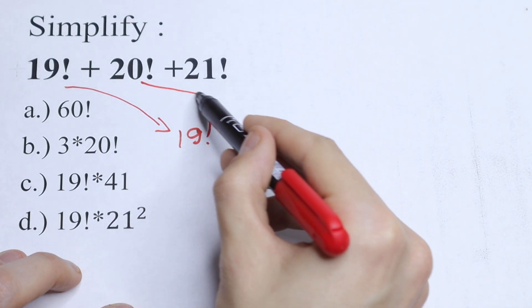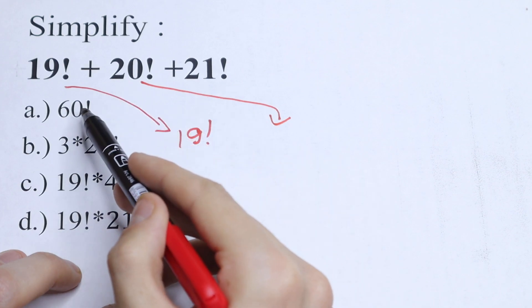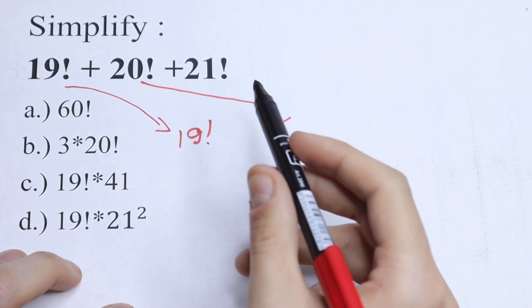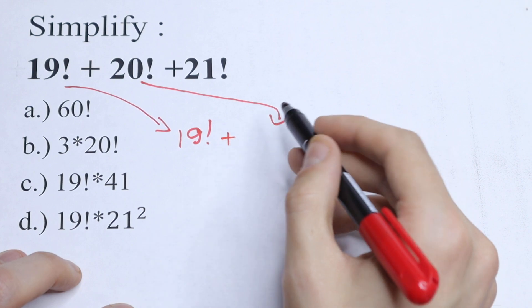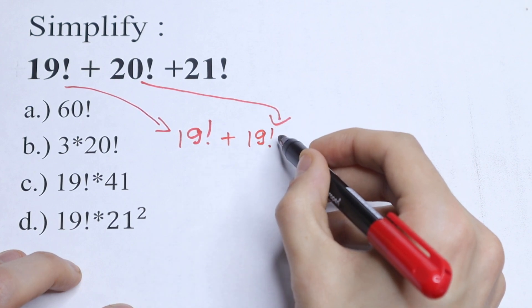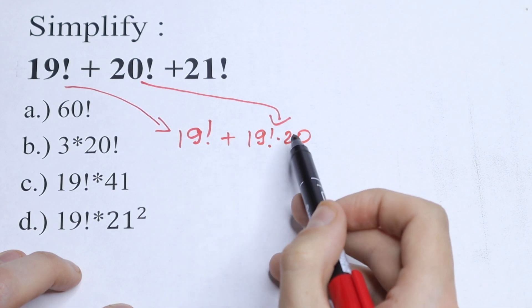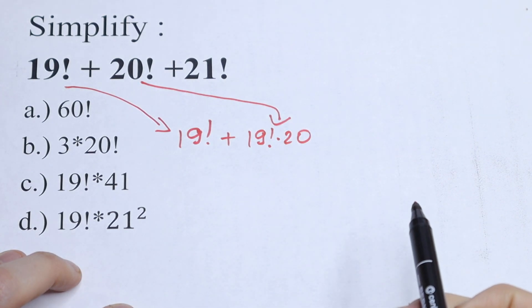This 20 factorial is a product from 1 to 20, so we can write this 20 factorial as plus 19 factorial times 20. 19 factorial will be product from 1 to 19 and write our 20 right here.